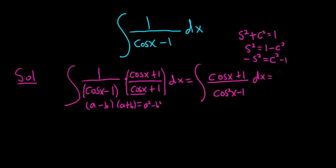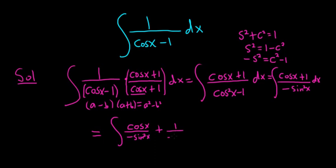So this is equal to the integral of cosine x plus 1 over, and then negative sine squared x dx. A little bit delicate. Then we're going to break it up. So this is equal to, I'll show every step. So cosine x over negative sine squared x plus 1 over negative sine squared x. Showing an extra step there.